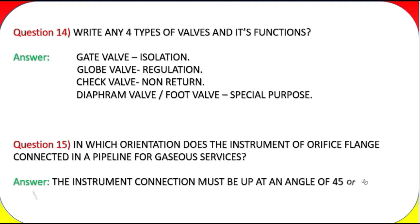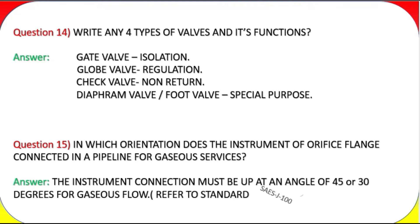Question 15: In which orientation does the instrument of an orifice flange connect in a pipeline for gaseous services? Answer: The instrument connection must be up at an angle of 45 or 30 degrees for gaseous flow. Refer to standard SAES-J-100.